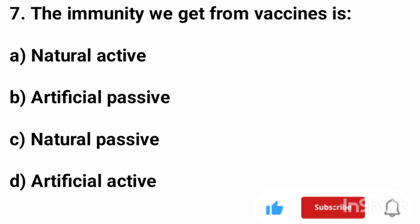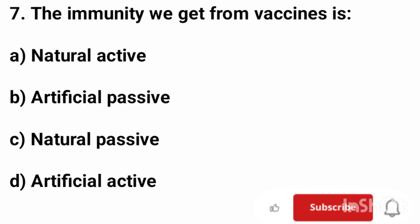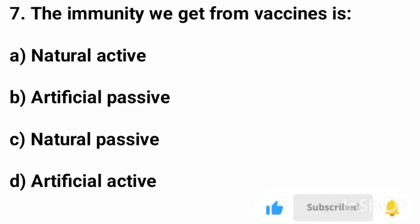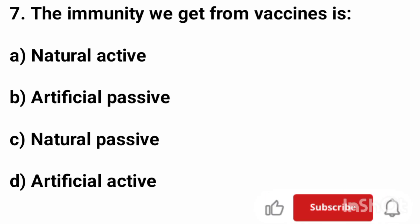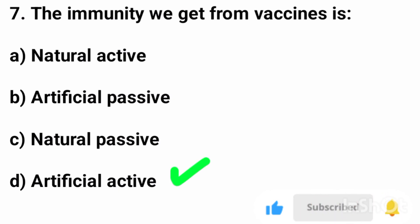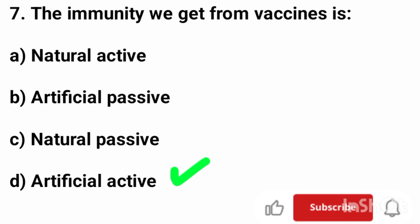Question number 7. The immunity we get from vaccines is? The correct answer is option D, artificial active immunity.